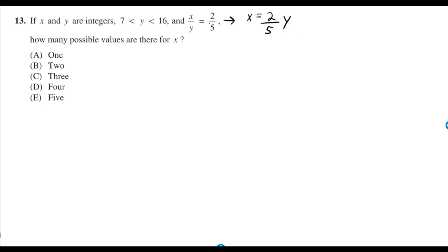You can first multiply both sides by y and get x is equal to 2 over 5 times y. Only when you do 2 fifths of 10 and 2 fifths of 15 are you going to be able to get an integer for x.